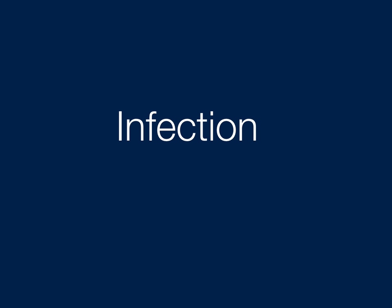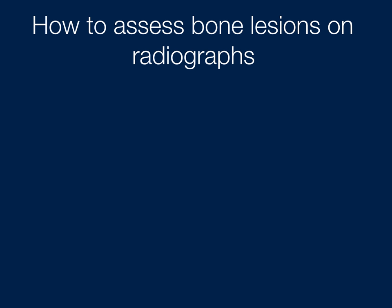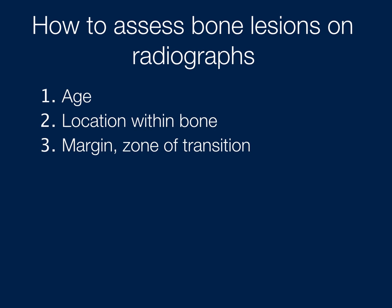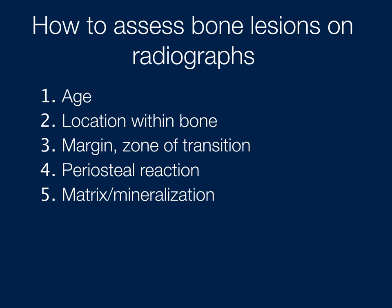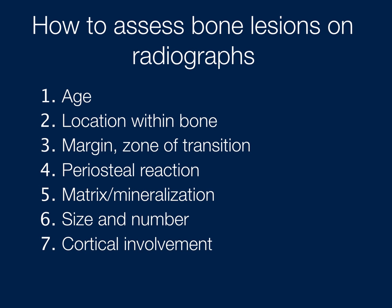Now we move on to radiographic assessment — what we do when we see the radiograph. We talked about age and location. The assessment starts with the margin of a lesion, specifically the zone of transition from the lesion to normal bone, the periosteal reaction, the matrix mineralization — often you can't see the matrix unless it mineralizes — and the size and number of the lesion, cortical involvement, and soft tissue component.